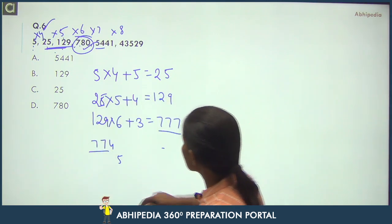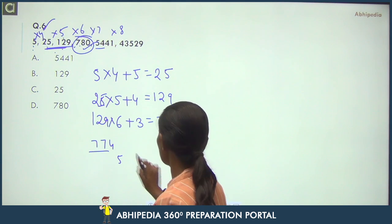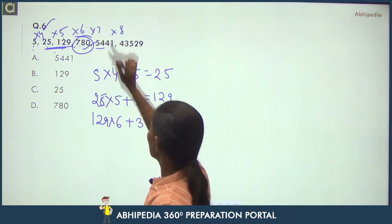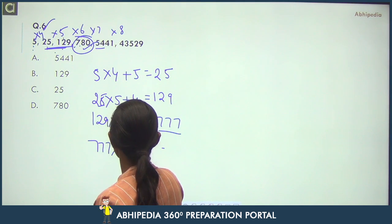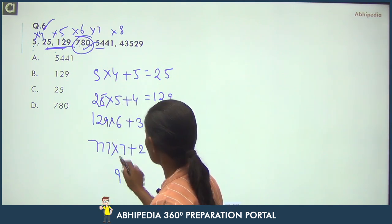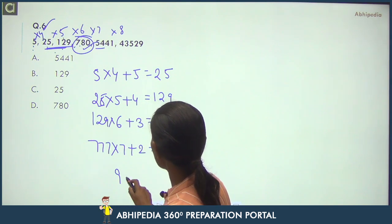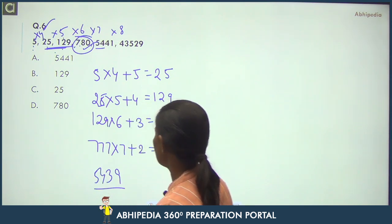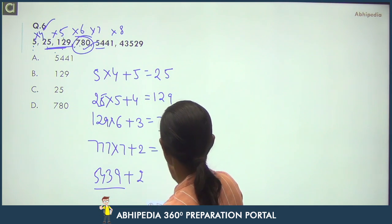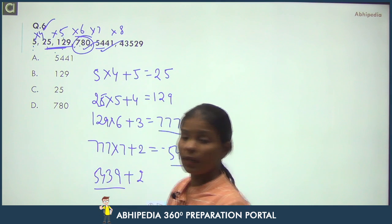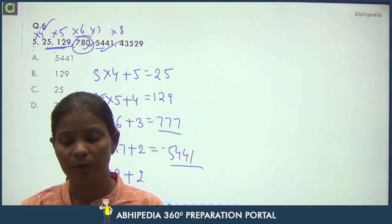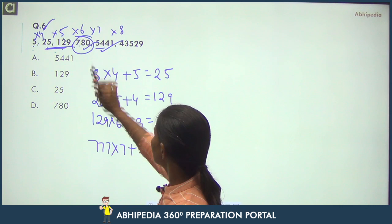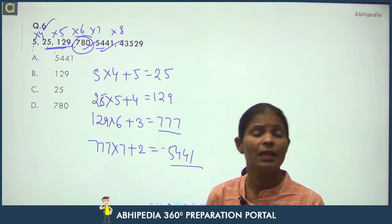For cross-checking: 777 × 7 + 2 = 5439 + 2 = 5441 — matches the given series! That confirms our answer. So 780 is the wrong term and in its place there should be 777. Done.